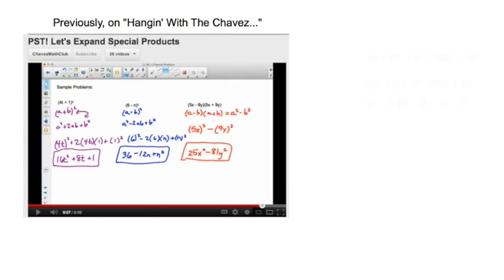Today we're talking about factoring by using special products. Previously when we talked about special products, we brought up the fact that if you have something in the form of a plus b squared, that would expand to a squared plus 2ab plus b squared.